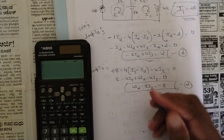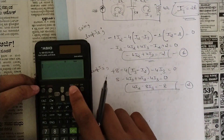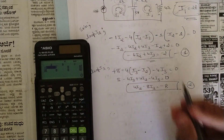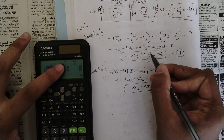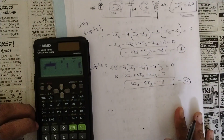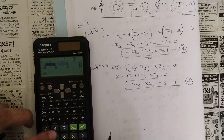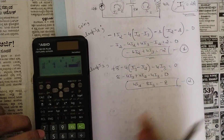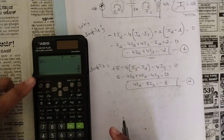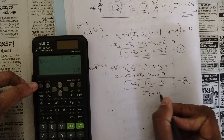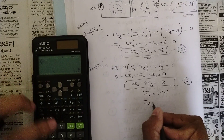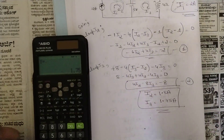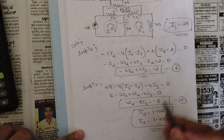Since we have two equations and two unknowns i2 and i3, enter them into the calculator in matrix mode with two equations. The coefficients and constants are: first row −6, 4, −2; second row 4, −8, −8. Solving gives i2 = 1.5 ampere and i3 = 1.75 ampere.